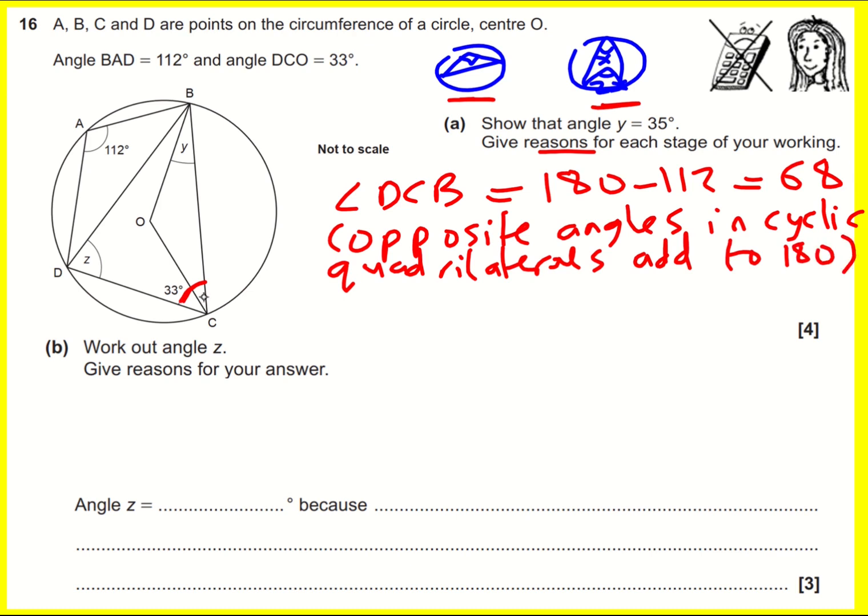What next? So I've got that, so now I can work out this little angle here. Angle OCB equals 68 minus 33, which is 35, and this is just, I'm not going to give a reason for that one. It's just kind of obvious.